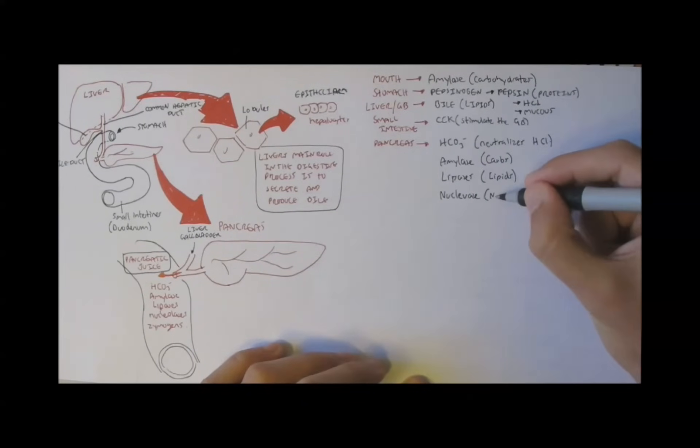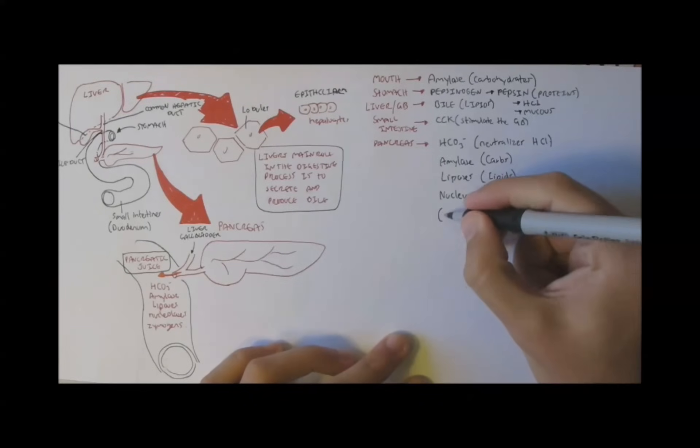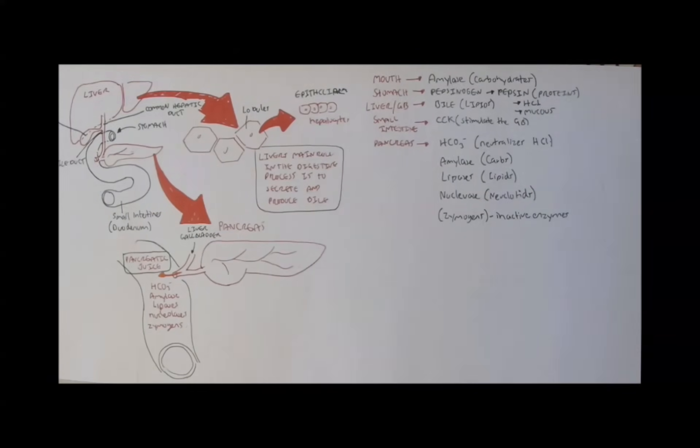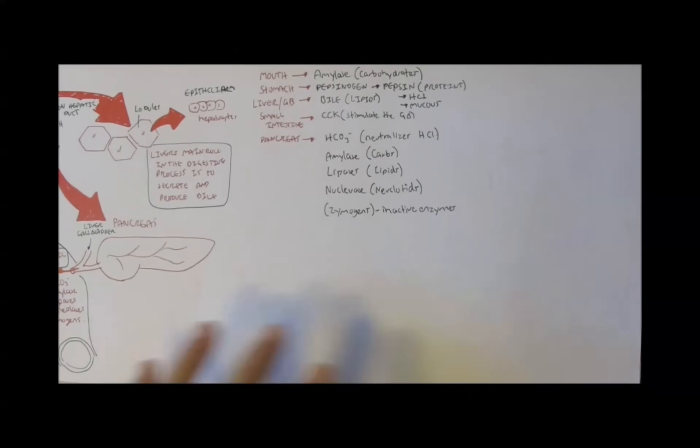Amylase, same as the mouth, digests carbs. Lipases digest lipids. Nucleases digest nucleotides. And, there are also other zymogens which the pancreas secretes, which are inactive enzymes to help in the digestive process.